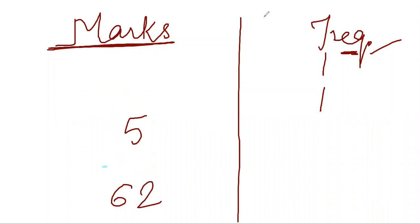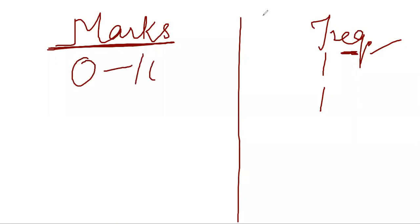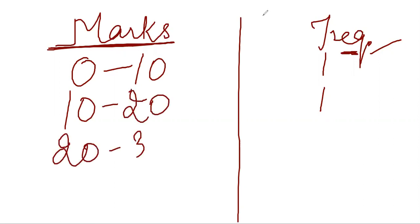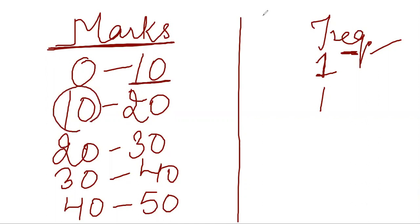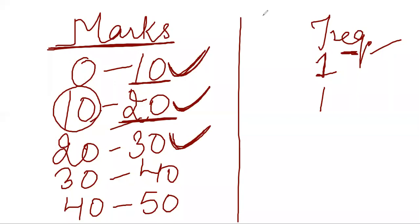There are two kinds of data: grouped and ungrouped. To convert data into groups, you can make intervals like 0 to 10, 10 to 20, 20 to 30, 30 to 40, 40 to 50, and so on. This is called a grouped frequency distribution table. We will not consider the upper limit in a given interval — for example, 10 is not included in 0 to 10; it is included in the next interval, 10 to 20.